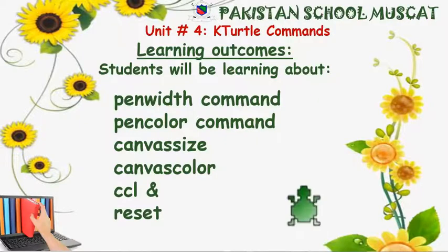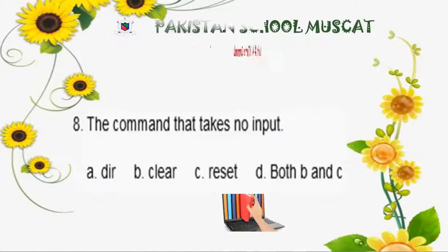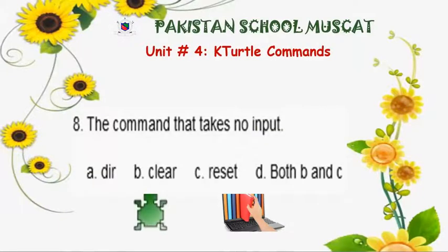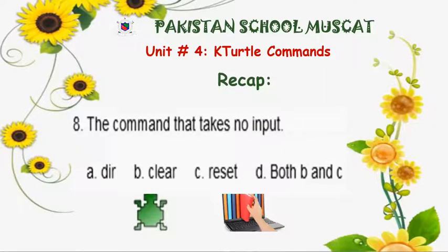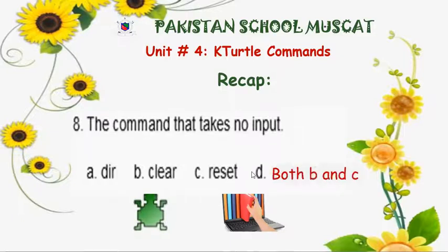Let's have a quick recap. The question is: which command takes no input? The options are: (a) dir, (b) clear, (c) reset, or (d) both b and c. With the dir command we always give numbers, similar to how we write steps with the forward and backward commands. But for clear and reset, these two commands never take any number — we only write clear or reset. So the correct answer is both b and c.